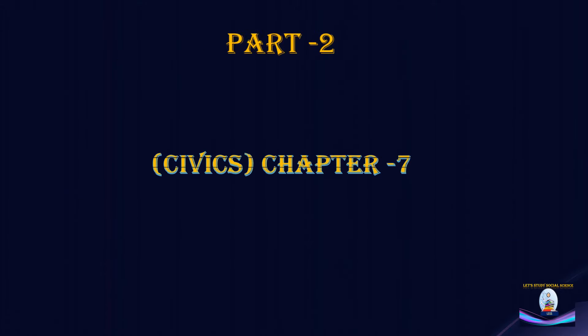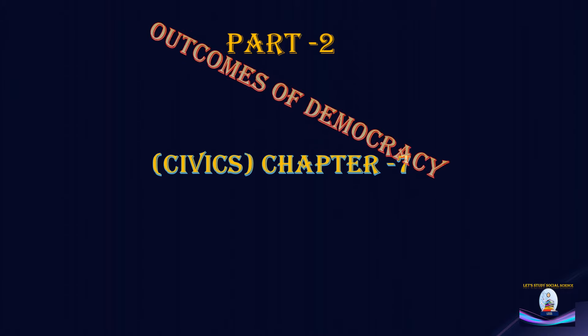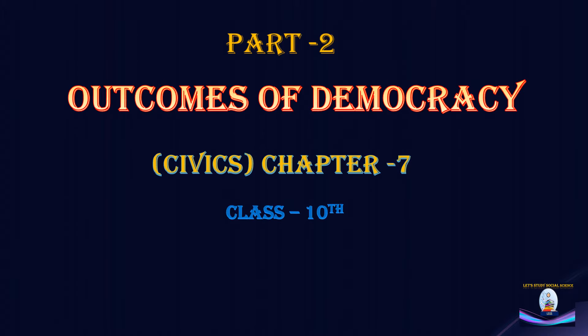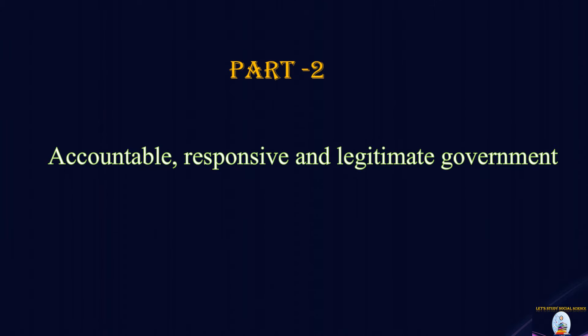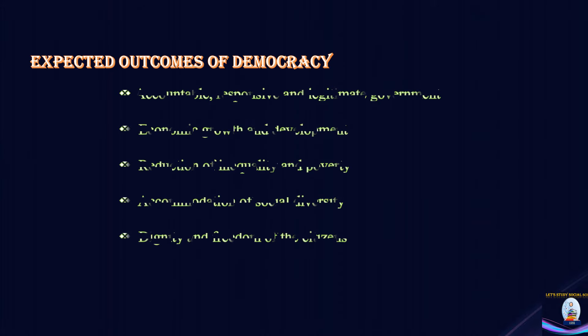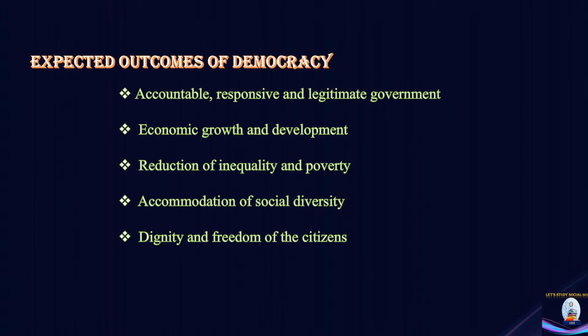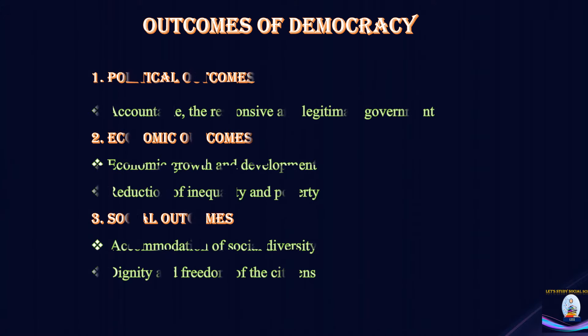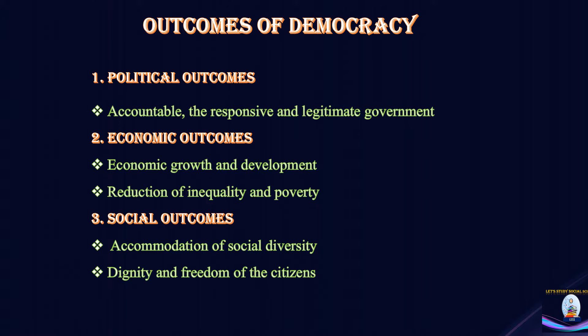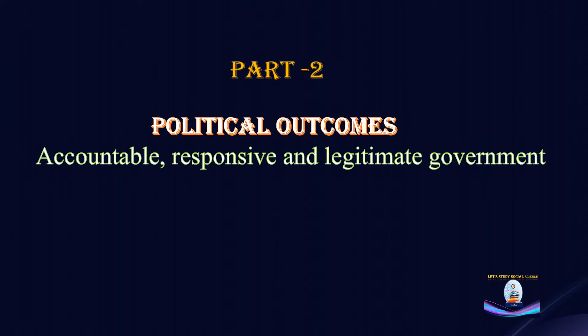Welcome to the study of social science. In this video lecture we would be discussing the second topic of chapter 7th of civics — the outcomes of democracy for class 10th — and the topic is accountable, responsive and legitimate government. Democracy, the best form of government, promises some most expected outcomes, which can be classified into three major categories: political outcomes, economic outcomes and social outcomes. In this part we will examine the political outcomes of democracy: accountable, responsive and legitimate government.